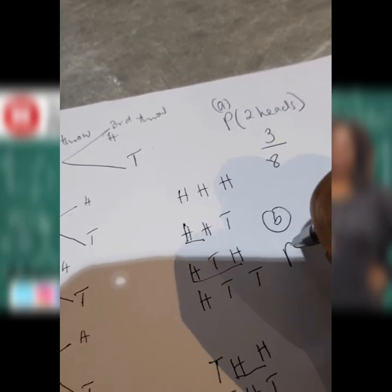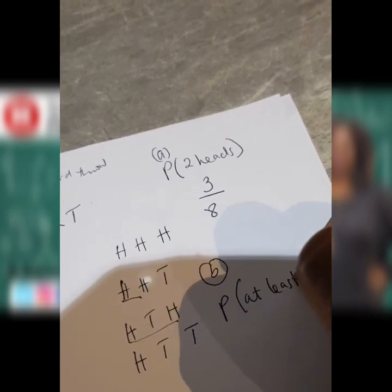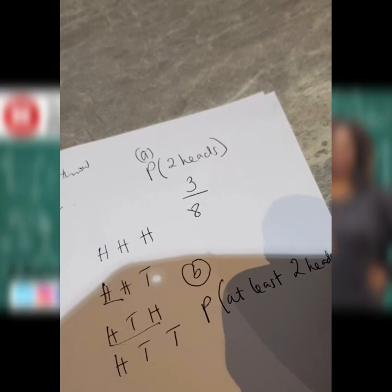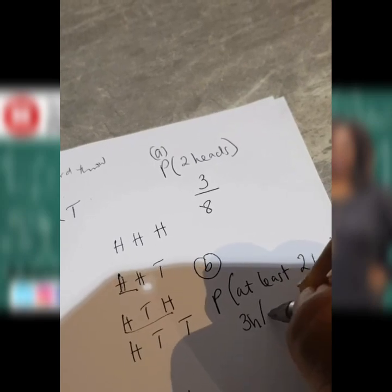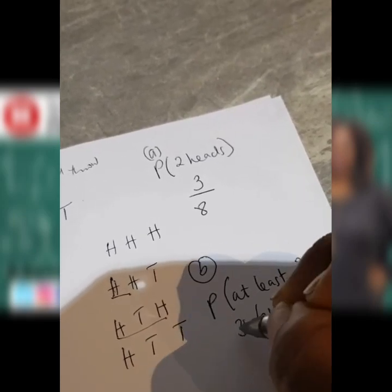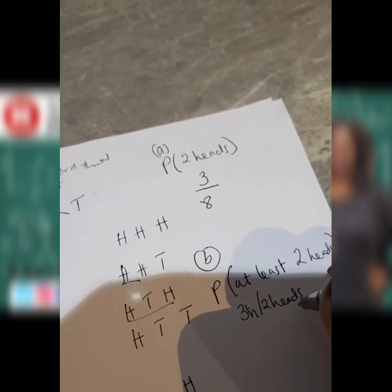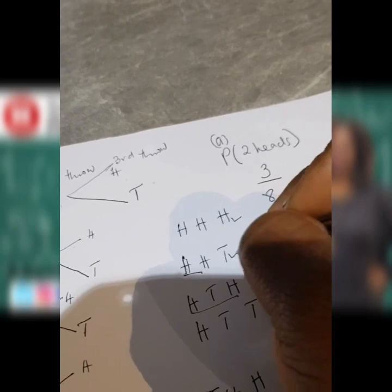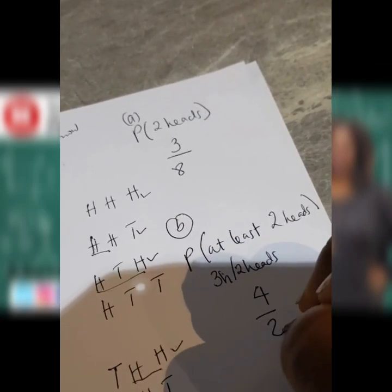For B, the probability of getting at least two heads: at least two heads means it could be three heads or two heads. We've got three heads in one combination, plus the three combinations with exactly two heads — that's four possibilities out of the eight combinations.